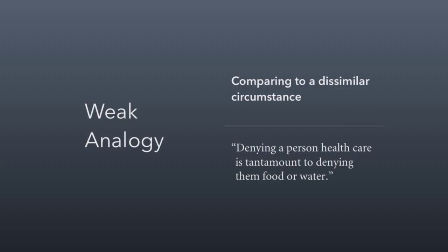Another logical fallacy is the weak analogy — comparing something to a dissimilar circumstance. Some people argue that denying a person healthcare is tantamount to denying them food or water, because both could lead to death. But it's not equivalent because healthcare is very expensive, whereas food and water are abundant and inexpensive. Demanding that we offer expensive, scarce resources to everybody simply isn't feasible, whereas providing everybody with food or water is far more reasonable.